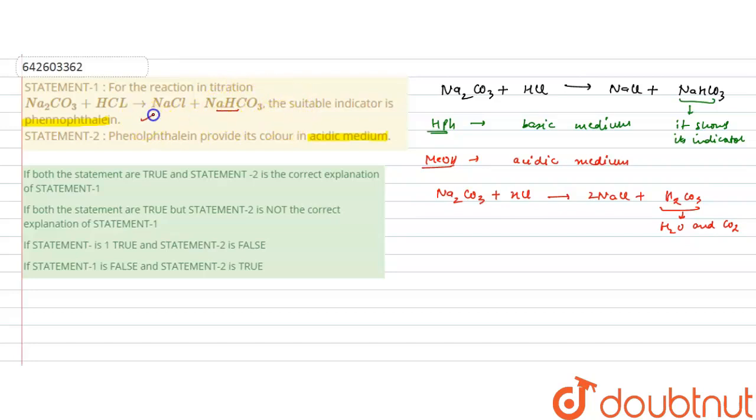The second statement says phenolphthalein provides its color in acidic medium, so it is wrong because it works in basic medium. NaHCO3 is basic - bicarbonates are basic - so it shows its color indication in basic medium, not in acidic medium. This is an incorrect statement.